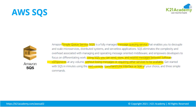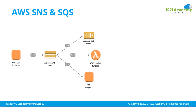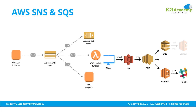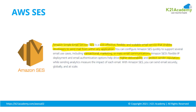You can use Simple Queue Service through the AWS web console, command line interface, or SDK. This is an example of using Simple Notification Service and Simple Queue Service together for processing — similar to Java Messaging Service or JMS queues in applications, but on AWS cloud.